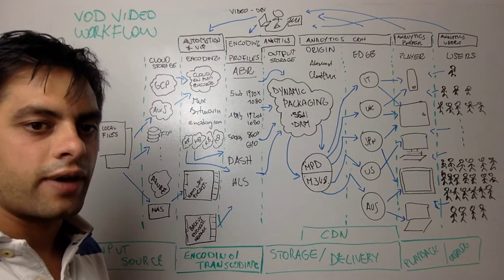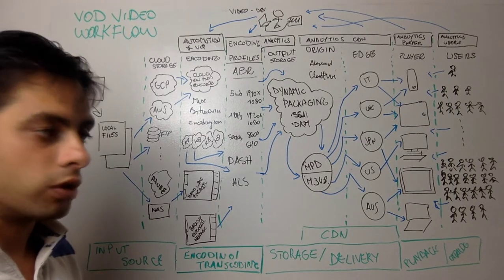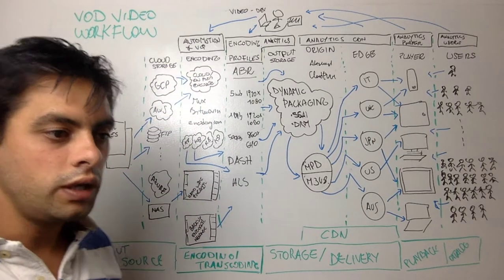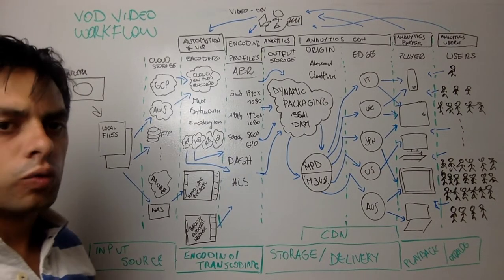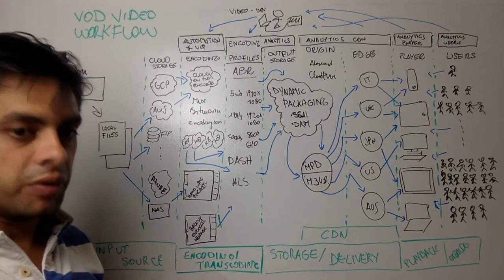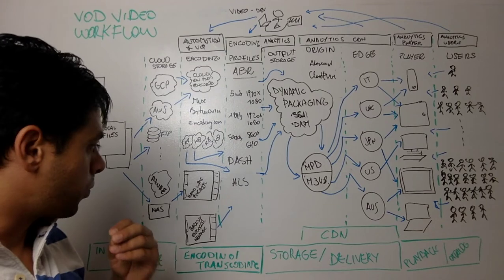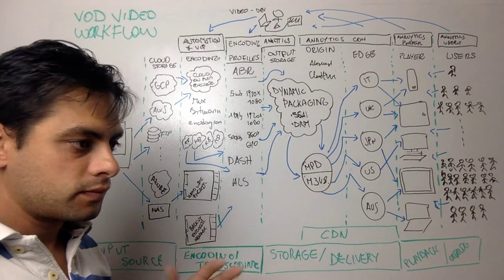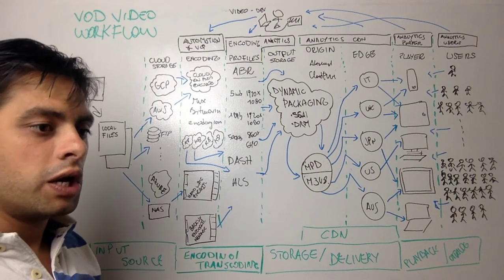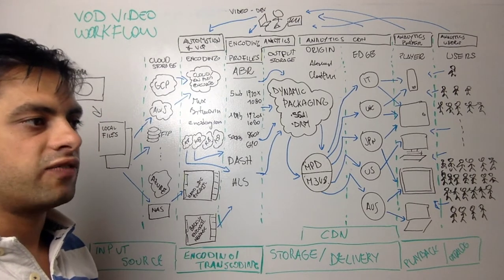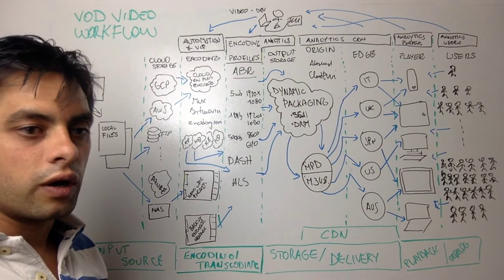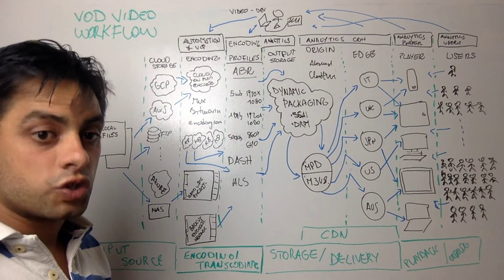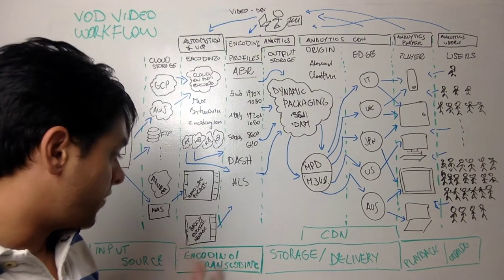On-prem encoding requires hardware locally but still runs on a computer. Hardware encoders, on the other hand, are actual cards specified solely for encoding to very high quality, and they can take in a very high bitrate stream or file.